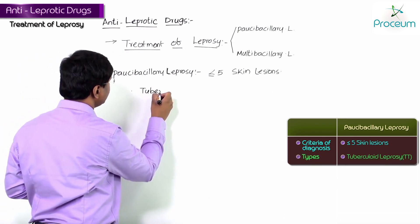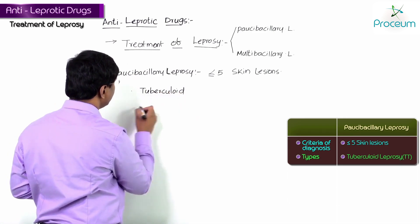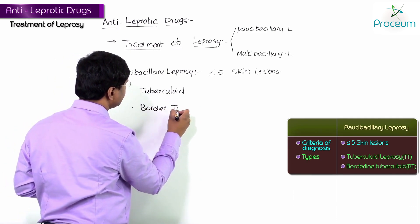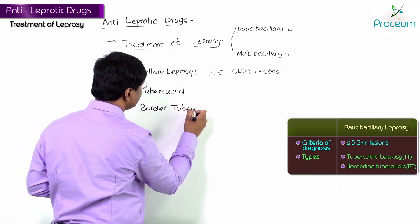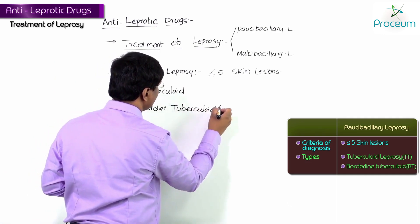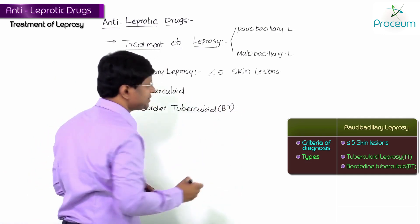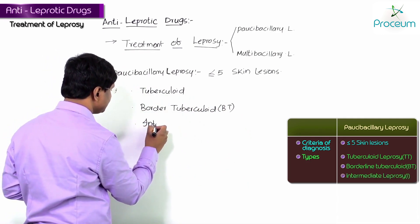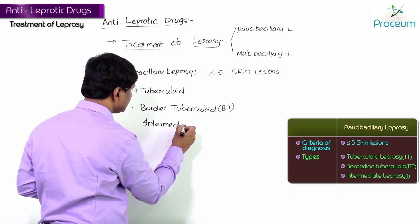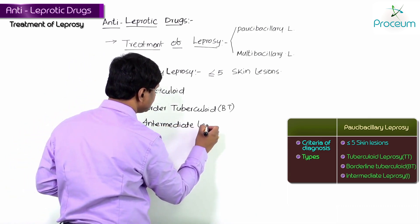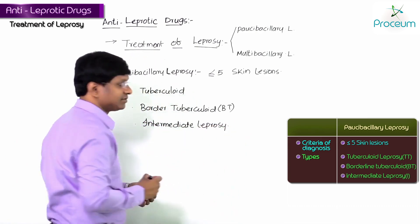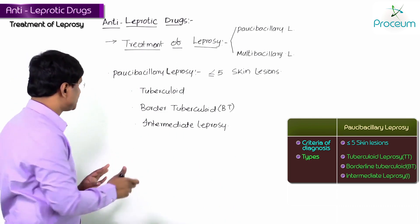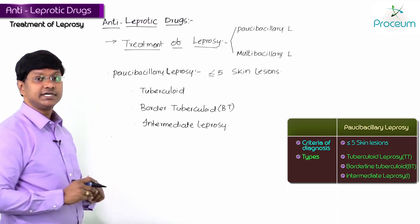Paucibacillary leprosy includes tuberculoid leprosy, borderline tuberculoid (BT), and the intermediate leprosy.